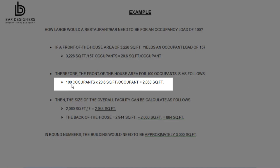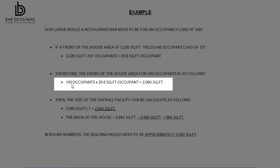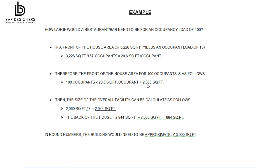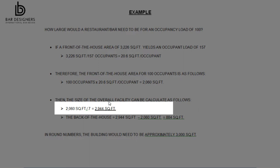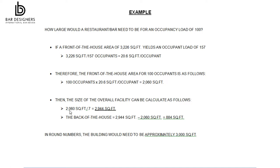Then the size of the overall facility could be calculated as follows: 2,060 square feet divided by 0.7 equals 2,944 square feet overall — that's the total facility needed. That yields a back of the house space of 884 square feet. In round numbers, the building would need to be approximately 3,000 square feet.